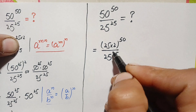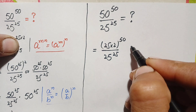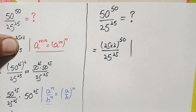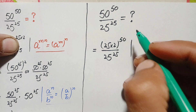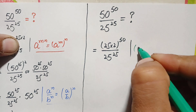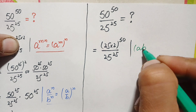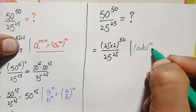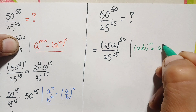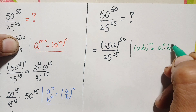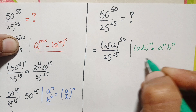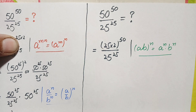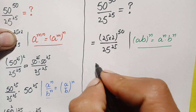We will use an exponential identity in the numerator: a times b, raised to power n, can be written as a raised to power n times b raised to power n. Using this identity, the numerator expands as 25 raised to power 50 times 2 raised to power 50.